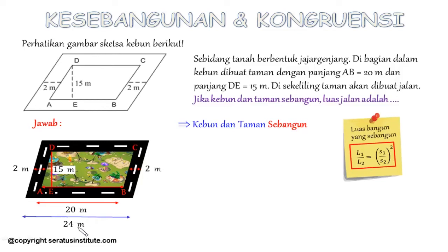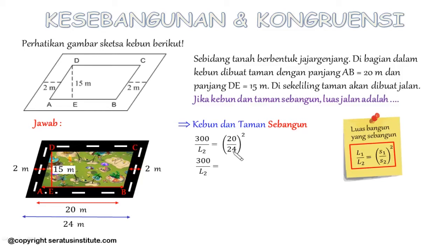Kemudian kita masukkan ke dalam rumus luas bangun yang sebangun. Luas taman tadi diketahui 300, kemudian luas 2 itu luas kebun yang akan kita cari. Berbanding dengan 20 banding 24 dikuadratkan. Nah 20 dan 24 kalau dikuadratkan nilainya besar, sebaiknya kita sederhanakan dulu: sama-sama dibagi 4, jadi 5 banding 6, kemudian kita kuadratkan.